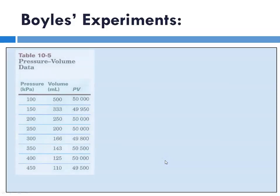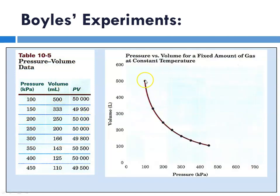In Boyle's experiments, he recorded pressures and volumes and looked at the relationship. The relationship is shown here in this graph. This is what we would refer to as an inverse relationship: as pressure goes up, volume goes down; as pressure goes down, volume goes up.